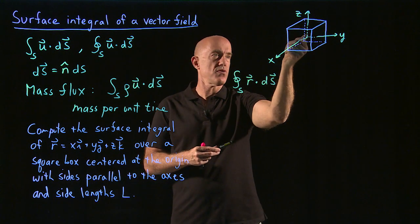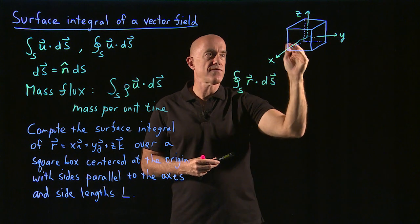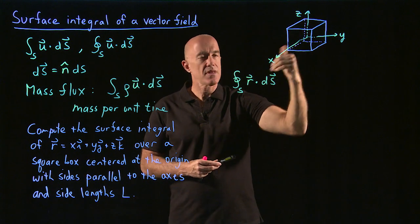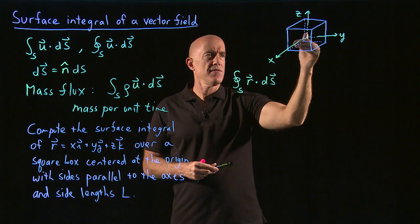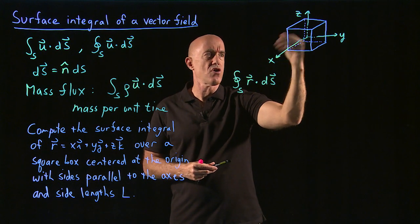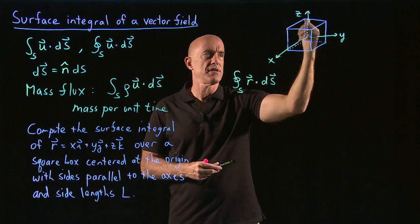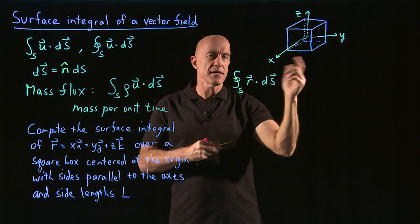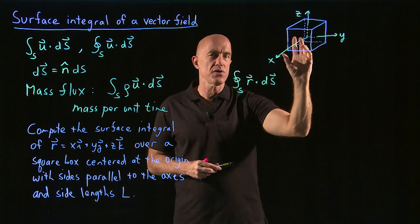R is always pointing outward from the origin. And I think you can see from the symmetry, the ds's are always pointing normal to outward normal to these faces, that it doesn't matter which face we compute.